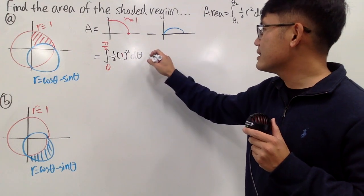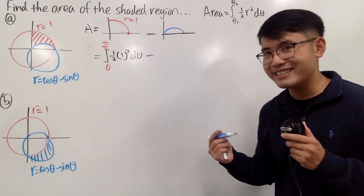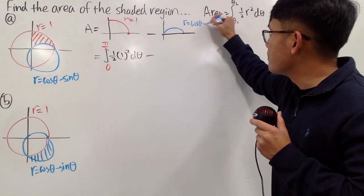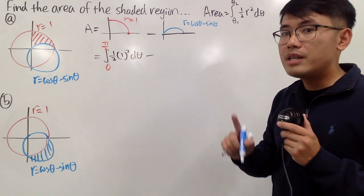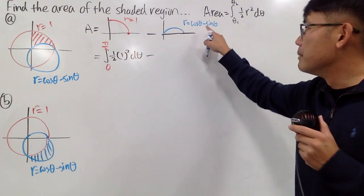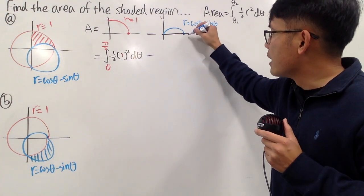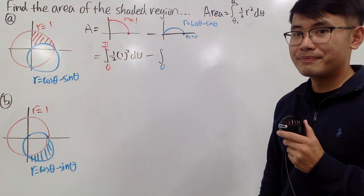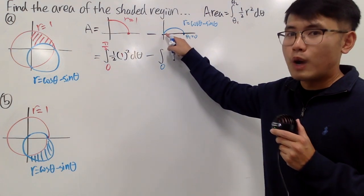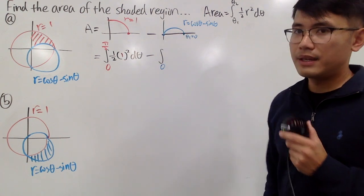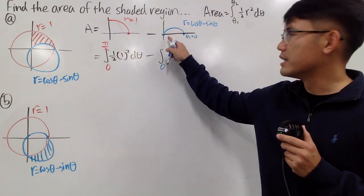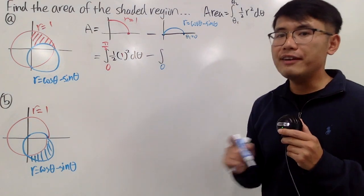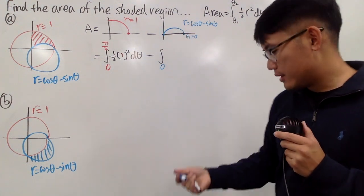Congratulations, that part is done. Now minus the other part — this is the tricky part, so pay close attention. The function here is r equals cosine theta minus sine theta. If theta equals 0, cosine 0 is 1 and sine 0 is 0, so this starting point is at theta 1 equals 0. However, we have to find the angle where the curve hits the origin — and that is NOT pi over 2.